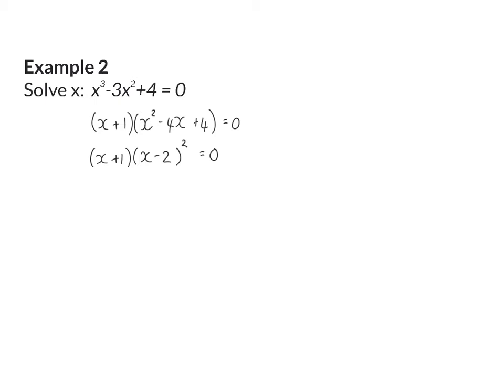This means that this equation has two real solutions. Firstly, x can be equal to minus 1 to make the first factor zero, or x can be equal to 2 to make the second factor zero.